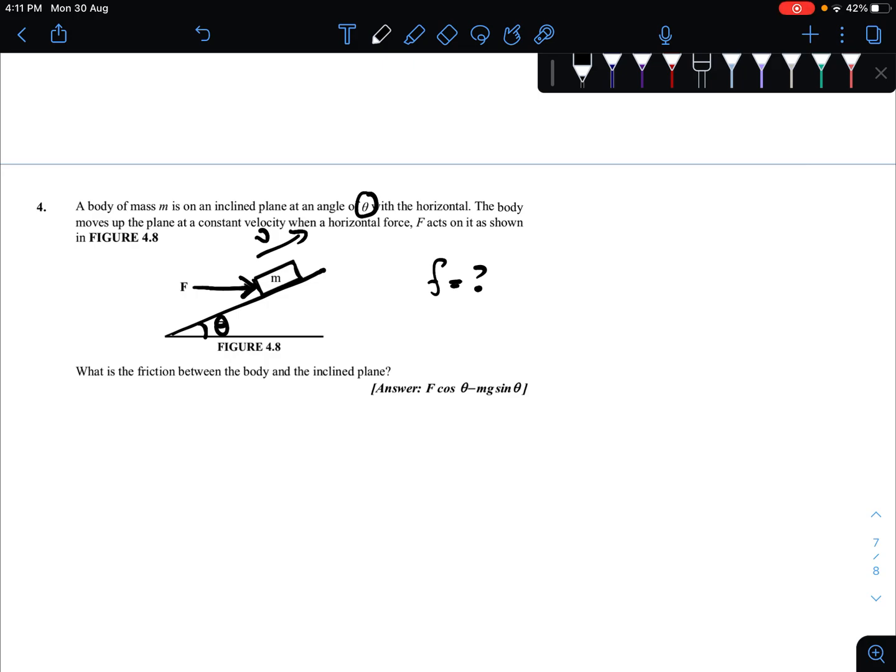Before we start with the question, let us first identify all the forces acting on it. So the forces that we have here - let us start from all the five basic forces: normal, weight, tension, frictional force and also external force. So normal, yes we have normal because it is on the surface and it should be perpendicular to the surface. Normal, this is our normal.